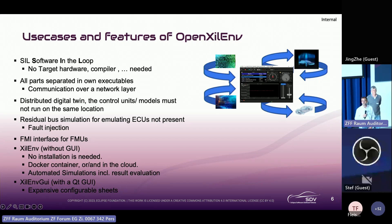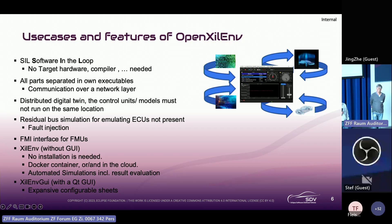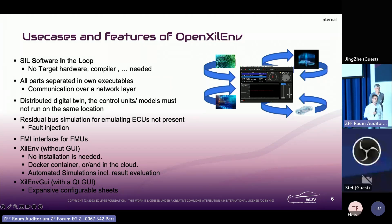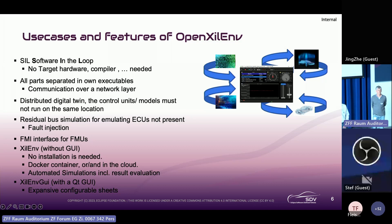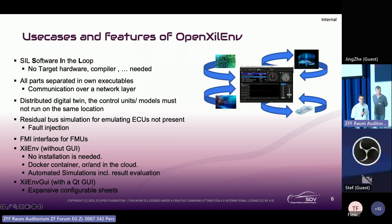Distributed digital twins are also possible — not all executables need to run on the same machine. You can distribute them across multiple machines or locations and still have an overall simulation for the whole software system. Residual bus simulation is also available: if a piece is not available, such as an ECU, you can emulate it using the REST bus simulation.